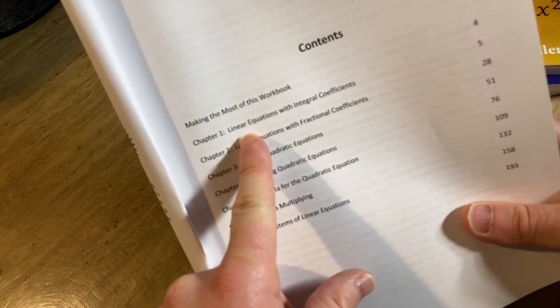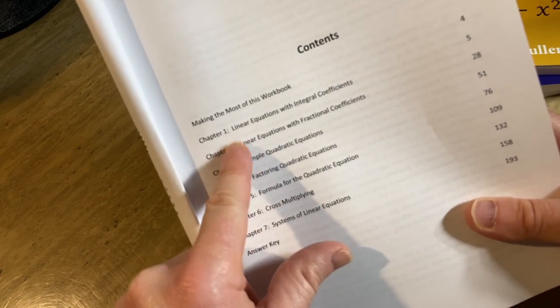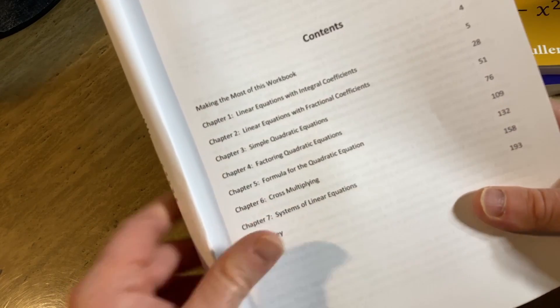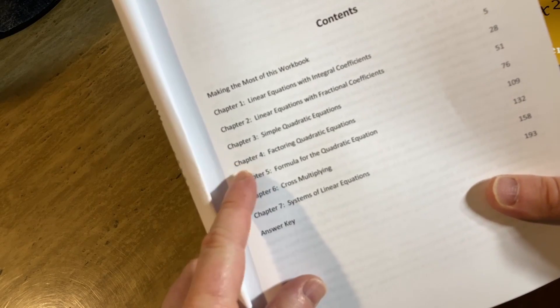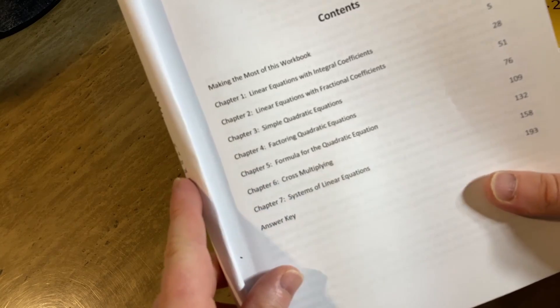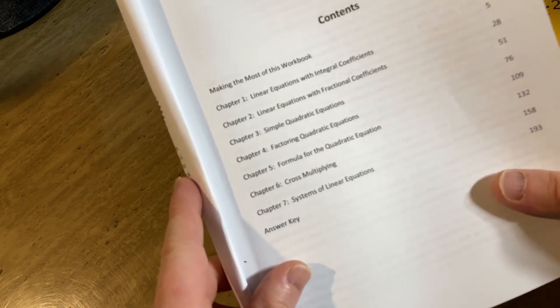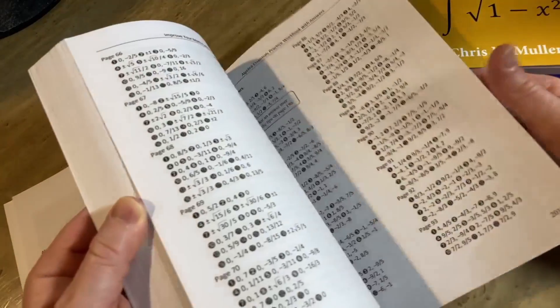So here you can see the topics: linear equations with integral coefficients, that means there's no fractions, and then chapter two says fractional coefficients, that basically means there's fractions. And then some quadratic equations, some factoring, the quadratic formula, some cross multiplying and systems of linear equations. So very, very limited in topics in this one, it's very, very limited.